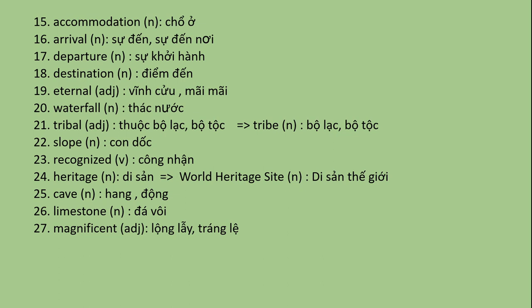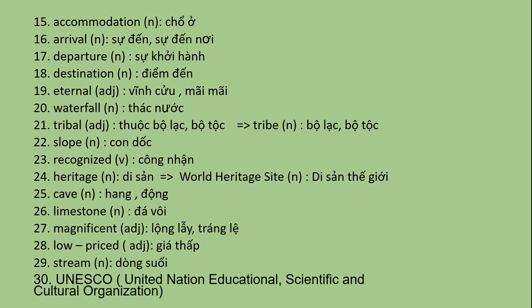Magnificent - Tính từ, có nghĩa là lộng lẫy, tráng lệ. Low-rise - Tính từ, có nghĩa là giá thấp. Number twenty-nine: Stream - Dòng suối. Và cuối cùng: UNESCO - đó là viết tắt của United Nations Educational, Scientific and Cultural Organization.